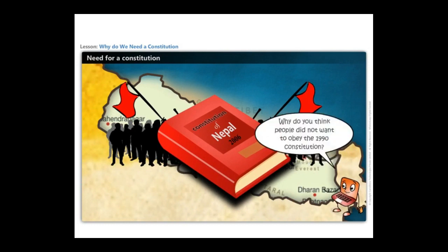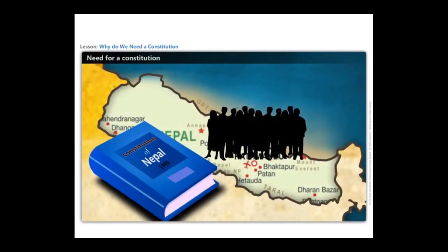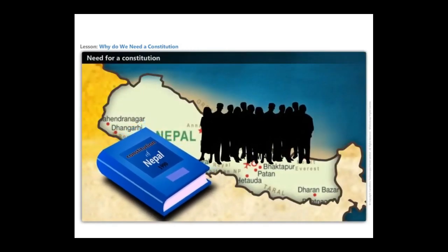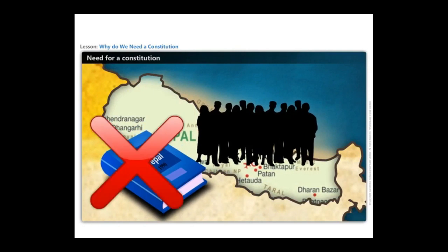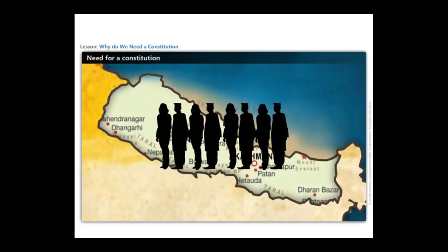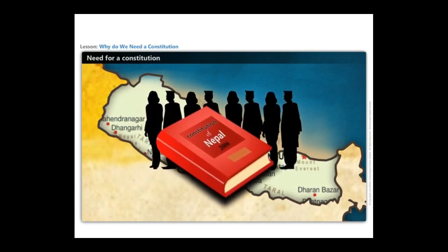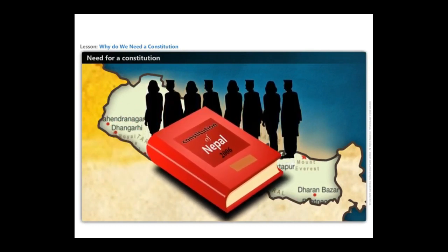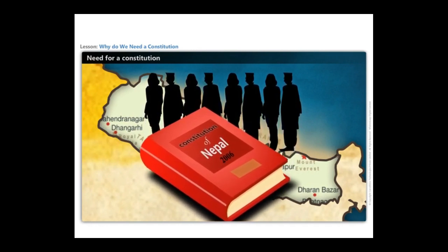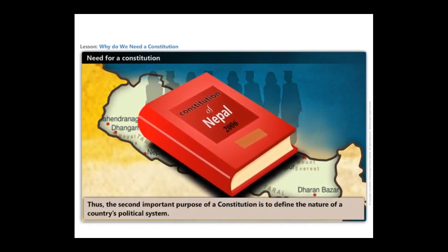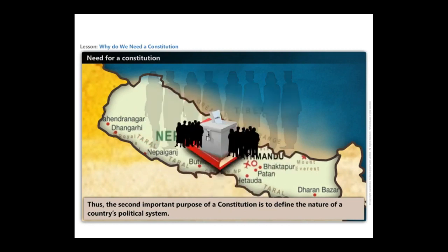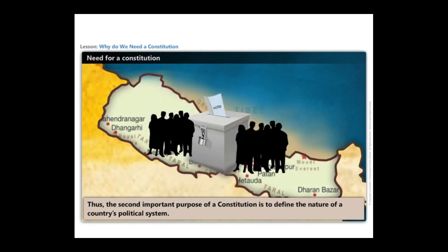Why do you think people did not want to obey the 1990 constitution? The Nepal population did not want to continue with the previous constitution because it did not reflect the ideals of the country that the people wanted it to be. While moving from a monarchy to a democratic government, the constitution plays a crucial role in laying out certain important guidelines that govern decision making. Thus, the second important purpose of a constitution is to define the nature of a country's political system.